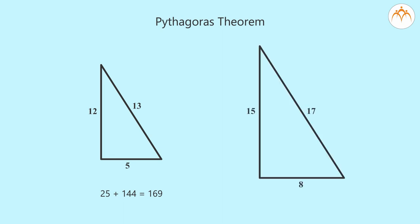Similarly, 8, 15 and 17. 64 plus 225 gives 289. Let us solve a few examples using the theorem.